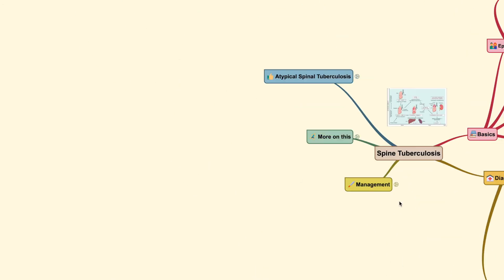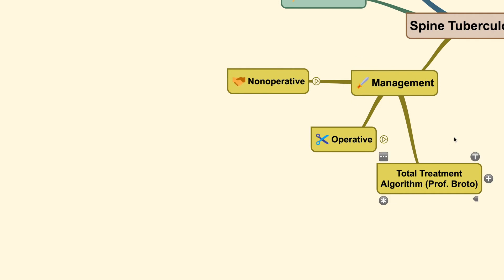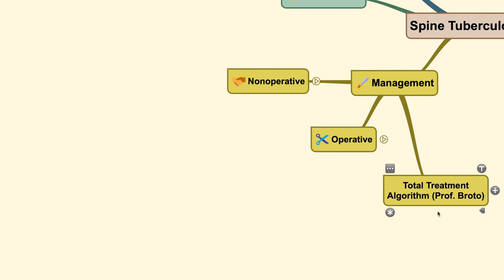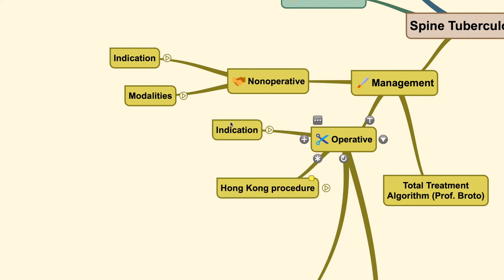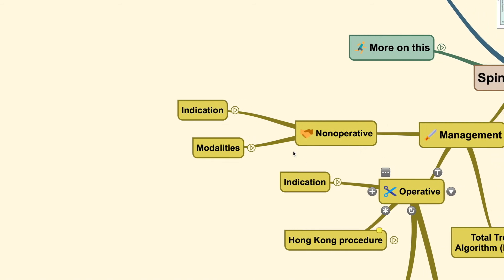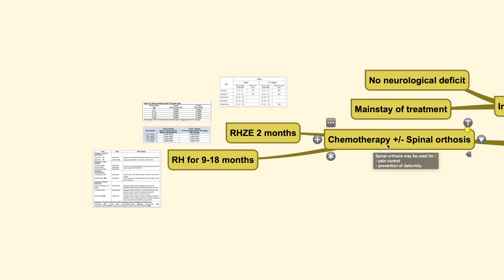Next is the treatment plan. For the management plan, it is usually managed non-operatively for mild cases, with surgery only in certain emergency cases. The non-operative treatment method is indicated when there is no neurologic deficit and remains the mainstay of treatment. What is usually done is providing chemotherapy with or without application of a spine orthosis to help control pain and prevent deformity.